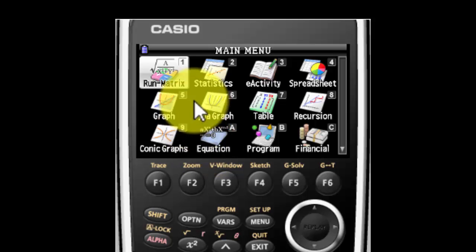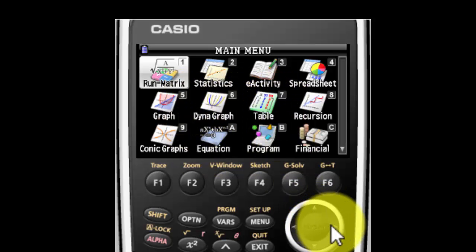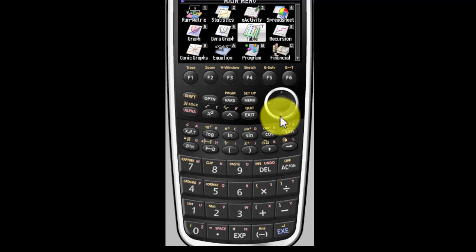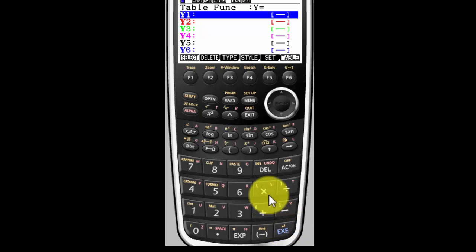And we're going to do a table. So for me, table is number seven. For you, it'll probably be a different number. So go ahead and look and find table. Either cursor over to it, or just hit the number by it and execute, and you're ready to go.